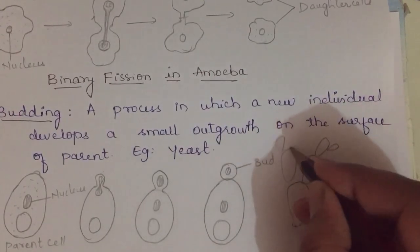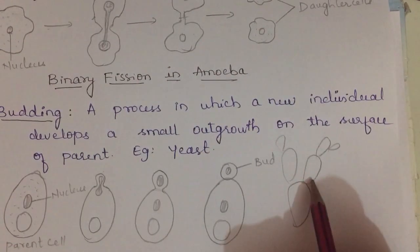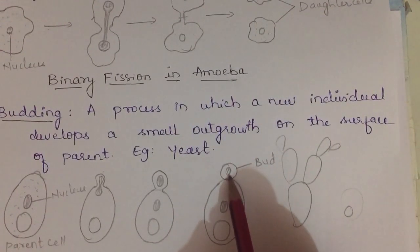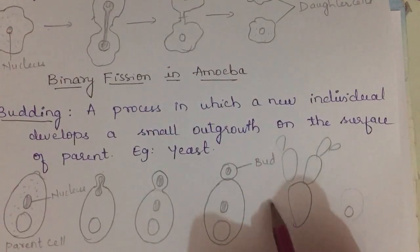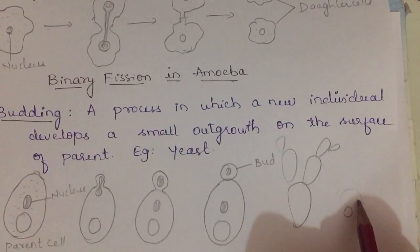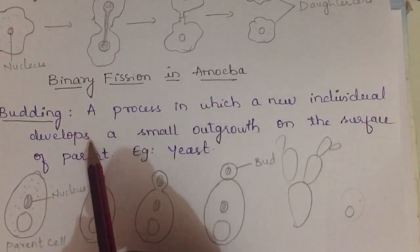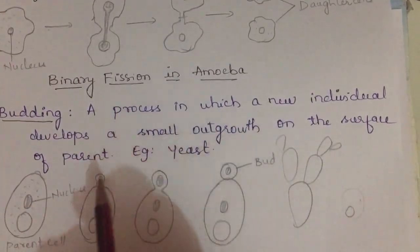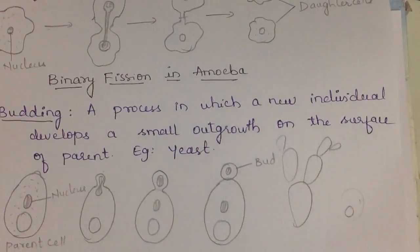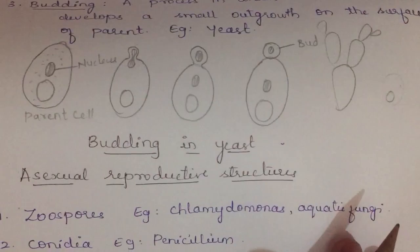The bud can grow on the same parental body — which makes yeast appear multicellular, though it is not — or it can detach and grow into a new individual. This is budding: a new individual develops from a small outgrowth on the surface of the parent. Example: yeast.